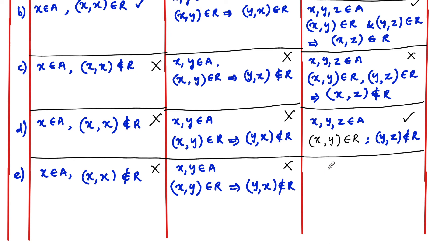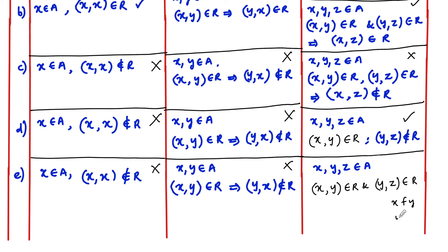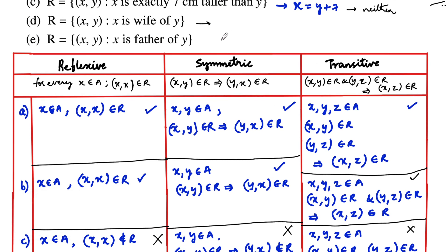Now let's check transitive. Consider three persons x, y, z belonging to A such that x is a father of y, and y is a father of z. When x is father of y and y is father of z, then x is a grandfather of z, not a father. So (x, z) does not satisfy the father relation, meaning (x, z) does not belong to r, and hence we can conclude that this relation is not transitive.